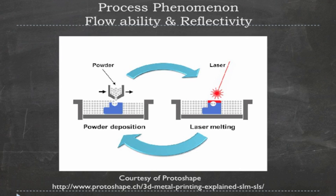Another phenomenon to note is the reflectivity of the metal powder. When the laser melts the metal powder, the metal becomes liquid, and liquid metal is very reflective due to its shininess. This shininess reflects laser beam energy away from the metal itself, so you require more energy to overcome this loss from reflection of the laser beam.